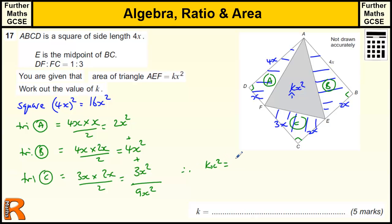Therefore, kx squared is going to be equal to 16x squared minus 9x squared, which is going to be 7x squared. Therefore, k equals 7.